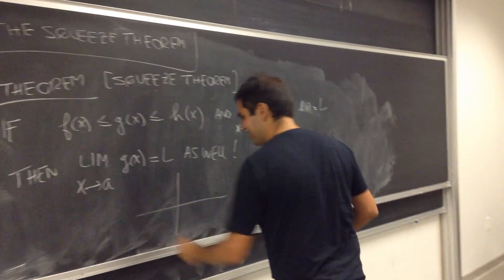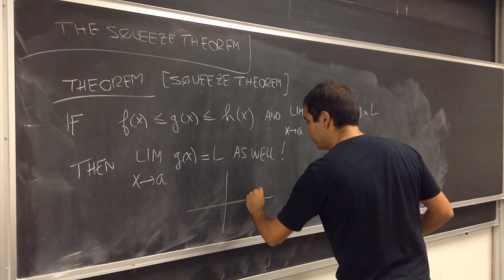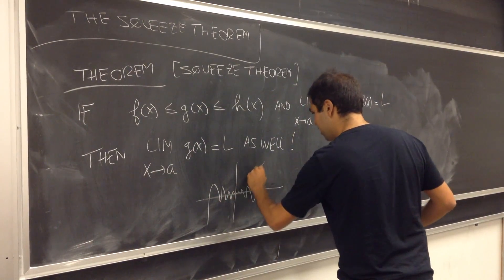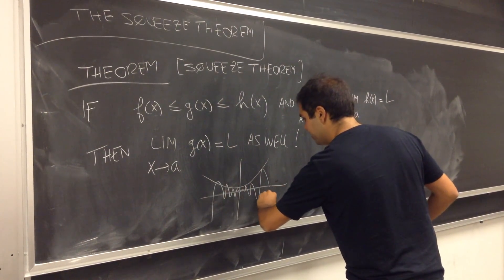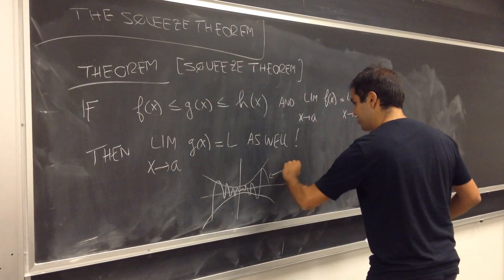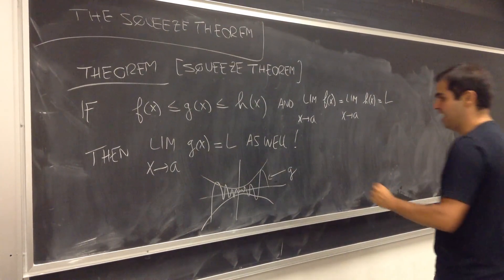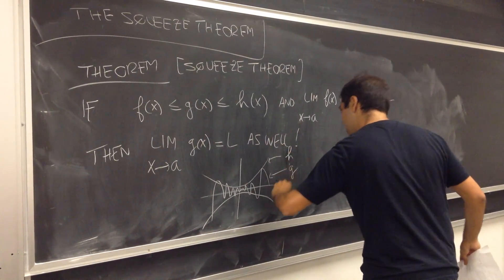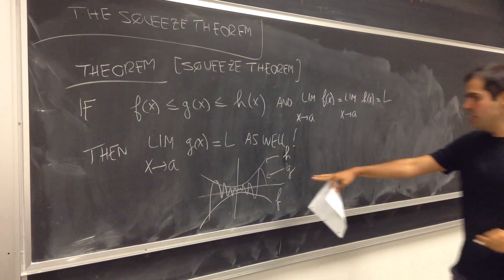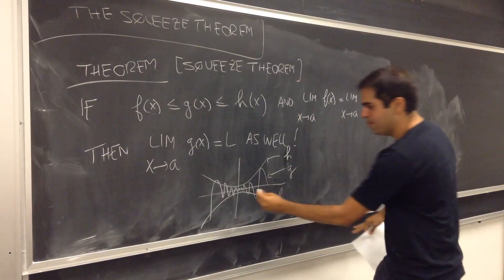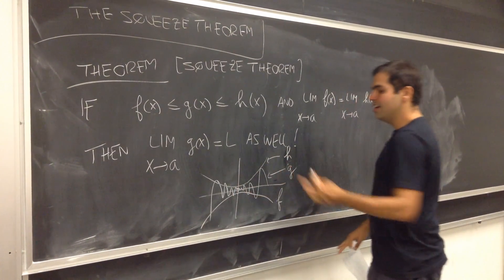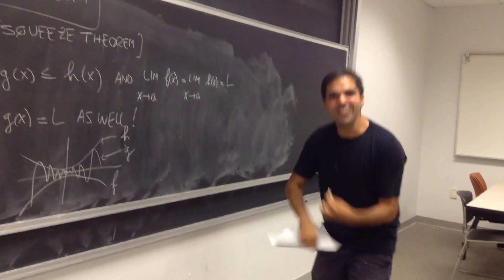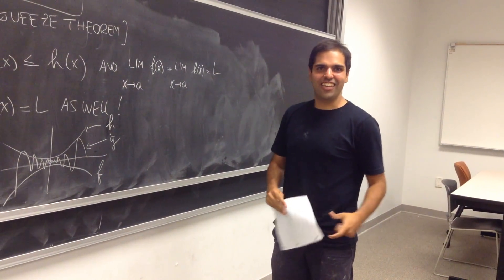Okay. So just to illustrate with the picture, suppose you have some weird function g that oscillates, like, widely. However, if it's squeezed, so this is a function g, if it's squeezed between f and h, h and f, and f, and we know that f and h have the same limit, so here's zero, as x goes to a, then, in fact, it forces or squeezes g to have the same limit as well.